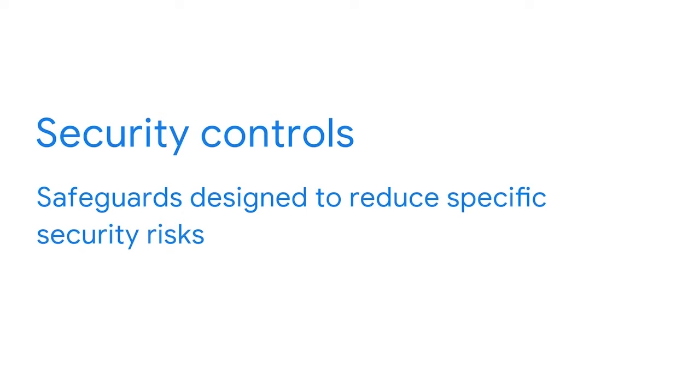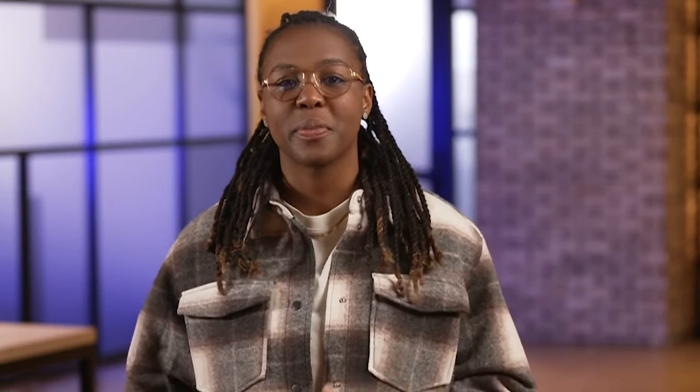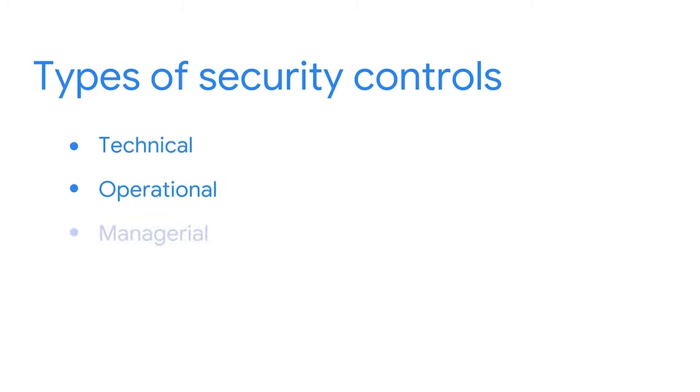These days, information is in so many places at once. Organizations are under a lot of pressure to implement effective security controls that protect everyone's information from being stolen or exposed. Security controls are safeguards designed to reduce specific security risks. They include a wide range of tools that protect assets before, during, and after an event. Security controls can be organized into three types: technical, operational, and managerial. Technical controls include technologies like encryption and authentication systems. Operational controls relate to maintaining the day-to-day security environment — people perform these, like awareness training and incident response. Managerial controls are centered around how the other two reduce risk — examples include policies, standards, and procedures. An organization's security policy outlines the controls needed to achieve their goals, and information privacy plays a key role in these decisions.